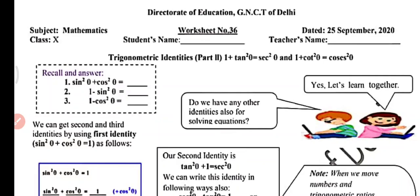Today we are going to study trigonometric identities part 2, which covers two identities: 1 plus tan² θ equals secant² θ, and 1 plus cot² θ equals cosecant² θ.